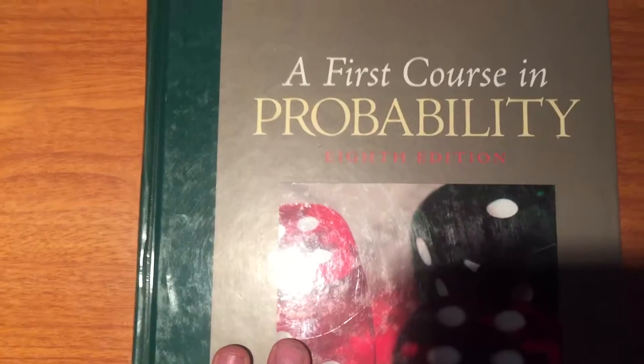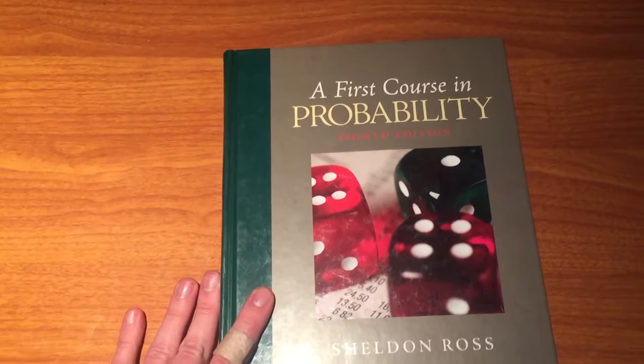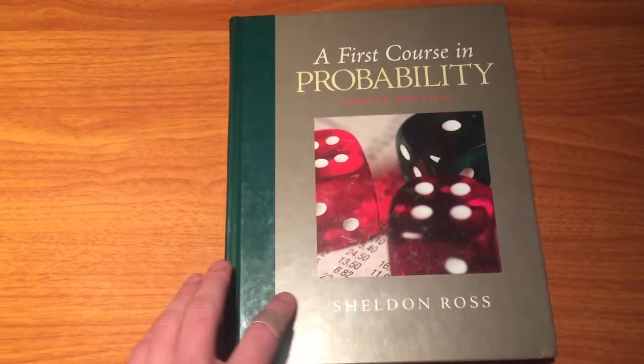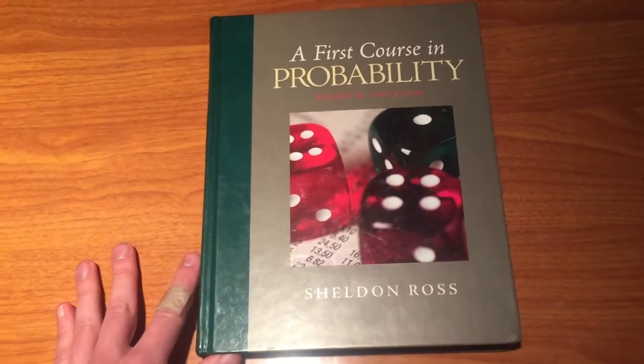The edition I have here is the eighth edition. I don't know if you can see it, it's written in red. This is the book that I used my junior year of college when I took my first probability theory class, and overall I like this book.